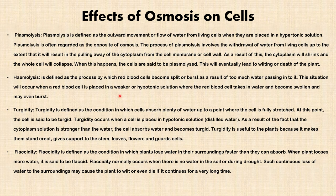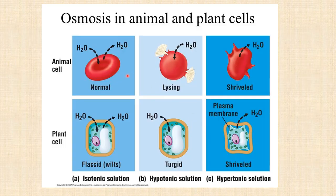In the case of an animal cell such as a red blood cell, the equivalent condition is haemolysis. The last effect is flaccidity. Flaccidity is defined as the condition in which plants lose water into their surroundings faster than they can absorb. When a plant loses more water it is said to be flaccid. Flaccidity normally occurs when there is no water in the soil or during drought. Continuous loss of water to the surroundings may cause the plant to wilt or even die.